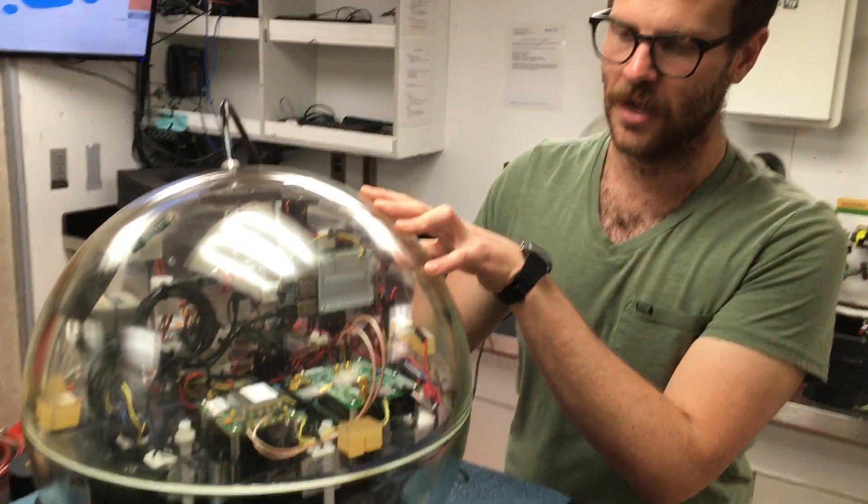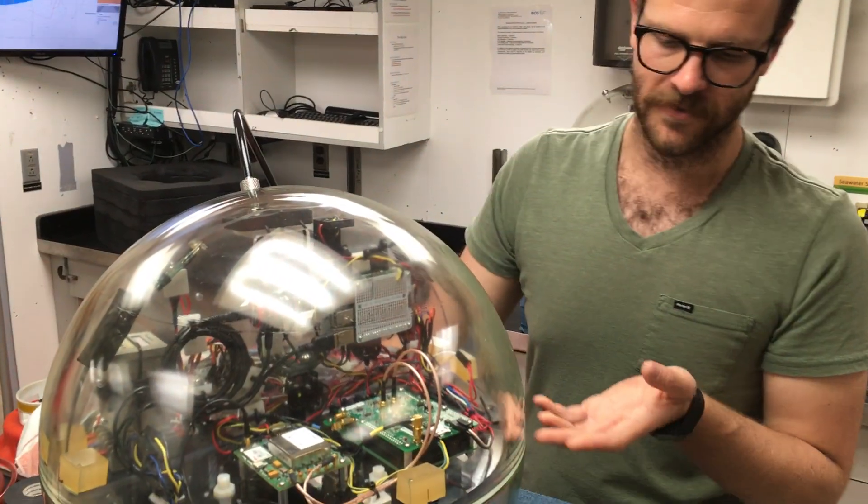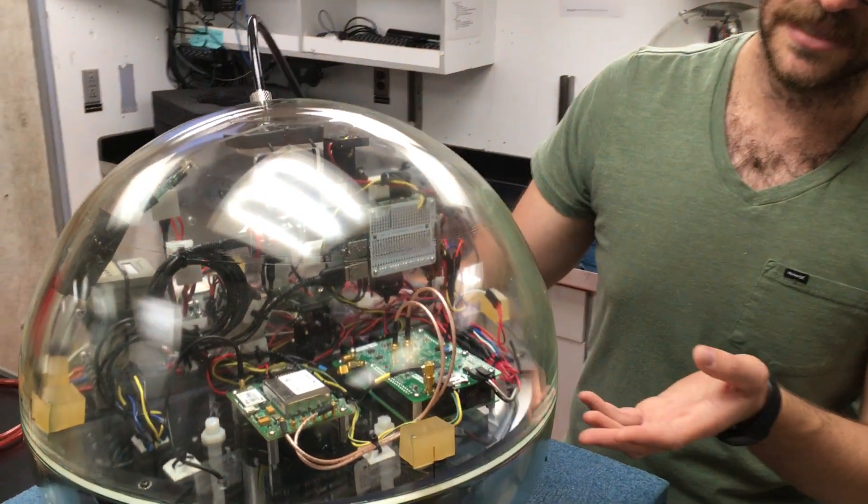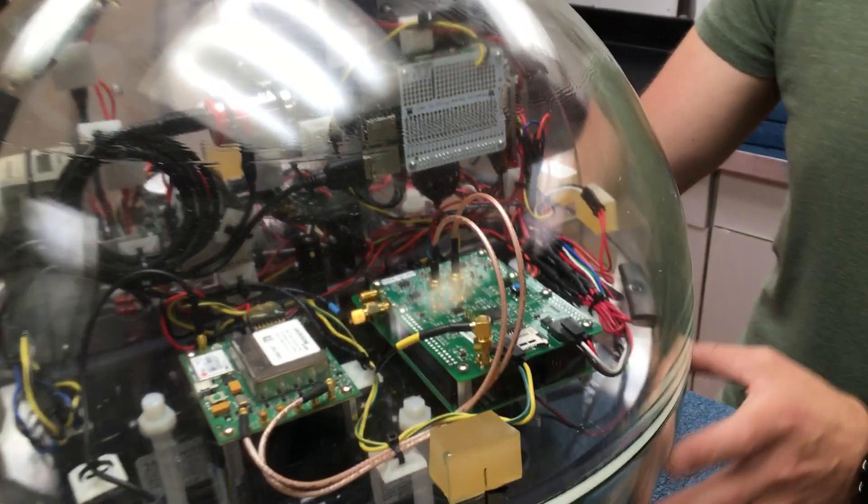Okay, so we're assembling these Nautilus glass hemispheres. They're very finely ground surfaces. We clean them with isopropyl alcohol very carefully.